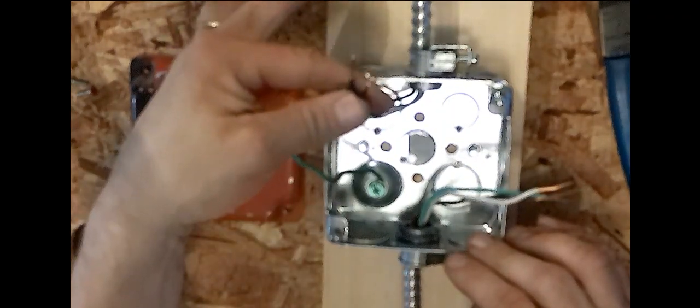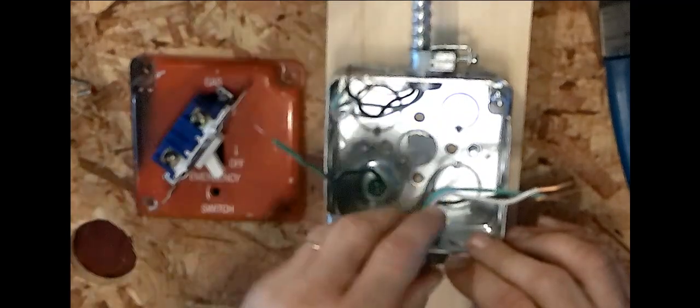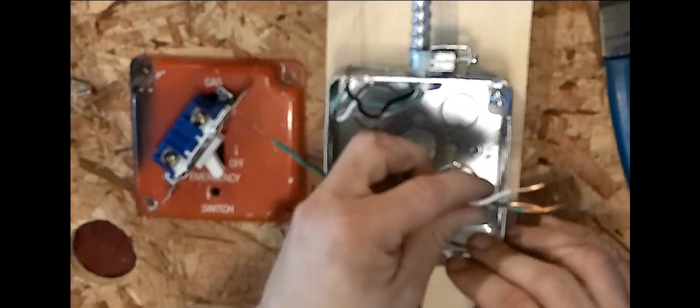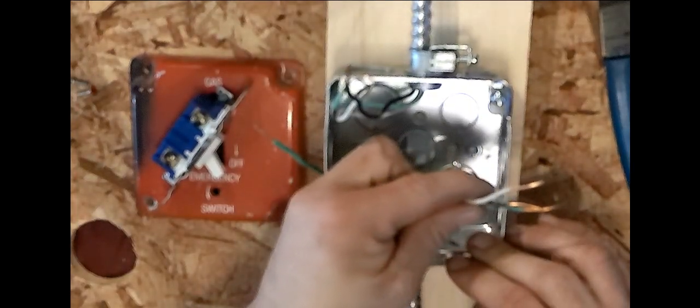These wires here are the wires coming in from the junction box coming in the top and coming out of the bottom are the wires that will be going on to our transformer.